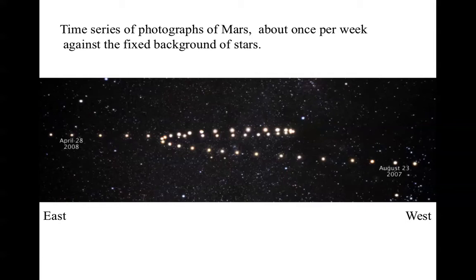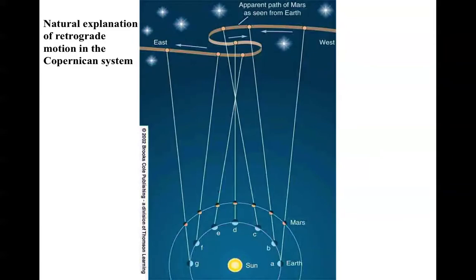Mars will continue to the east until the next time that the Earth and Mars are on the same side of the sky again. The heliocentric model provides a natural explanation of retrograde motion in the Copernican system, which you can't do with the geocentric model. In this picture, you see the sun at the bottom with the Earth and Mars both circling it counterclockwise, and then a series of lines drawn from the Earth through Mars to the distant background stars.